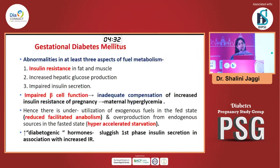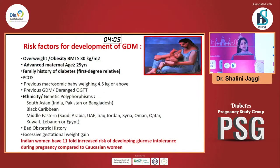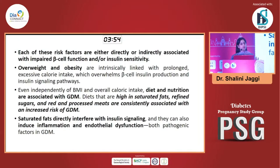Basically you can see a lot of activity in at least three parts of your metabolism: the insulin resistance in fat and muscle, increased hepatic glucose production, and impaired insulin secretion. There is inadequate compensation, and as a result facilitated anabolism is reduced and starvation is hyper-accelerated. So this type of gene expression again produces a sluggish post-prandial insulin secretion in association with the insulin resistance. This is who develops GDM — all these different contributing factors produce GDM.